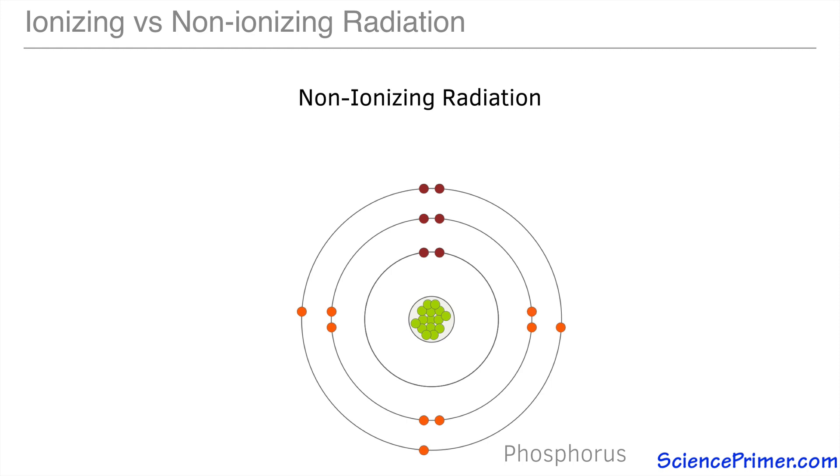There is no exact point of separation between ionizing and non-ionizing radiation, because the potential for radiation to ionize an atom depends, to some extent, on the characteristics of the matter involved, but the transition from non-ionizing to ionizing radiation occurs somewhere in the high ultraviolet range.